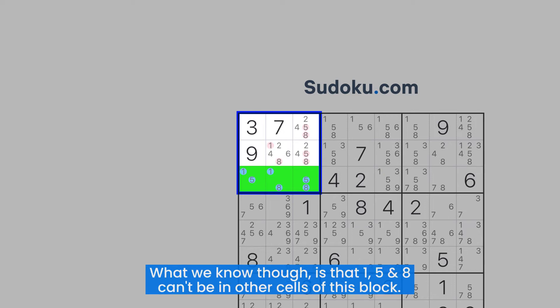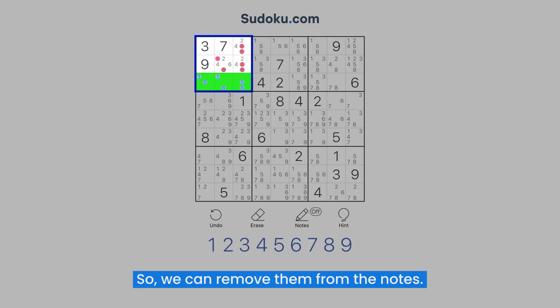What we know though is that 1, 5, and 8 can't be in other cells of this block. So we can remove them from the notes.